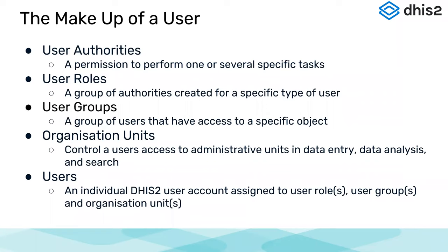User groups is a group of users that have access to a specific object in DHIS2. There are many different types of objects in DHIS2, and to provide access to these objects we use the concept called user groups. We also have organization units — a term you are familiar with from DHIS2 fundamentals. It is one of the three dimensions in DHIS2. Organization units control user access to administrative units in data entry, data analysis, and search. Finally, a DHIS2 user is an individual DHIS2 account assigned to user roles, user groups, and organization units.